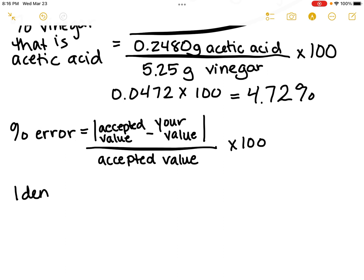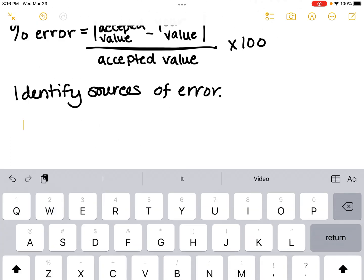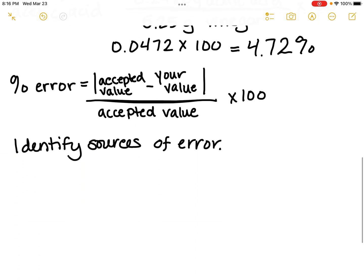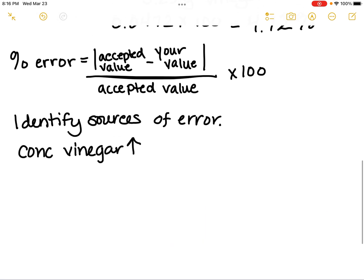I also want you to identify sources of error, but not just identify them. Tell me what that would do to your percentage of vinegar. Would it make you think your concentration of vinegar is higher or lower?